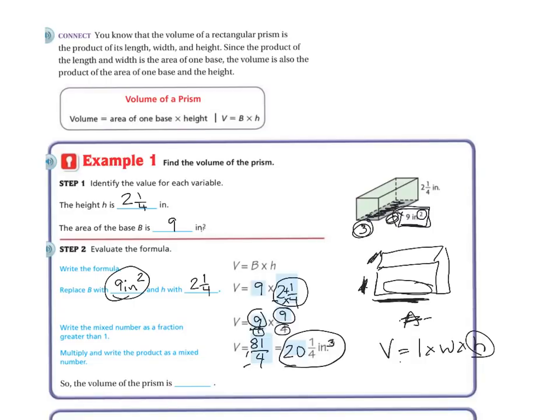So squared is the area, cubed is my volume. So the volume of the prism is 20 1/4 inches. Make sure you do cubed.